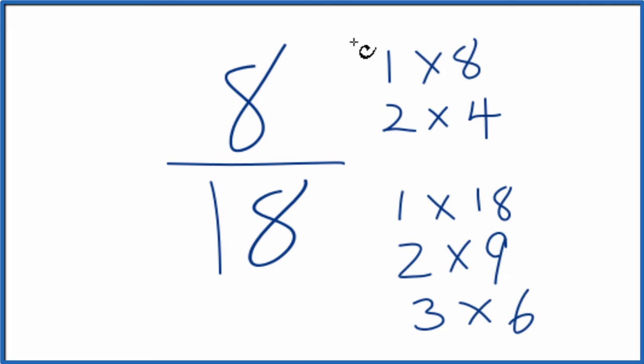When we look at the common factors for 8 and 18, we're looking for the greatest common factor. And it looks like 2. That's going to be the greatest common factor.